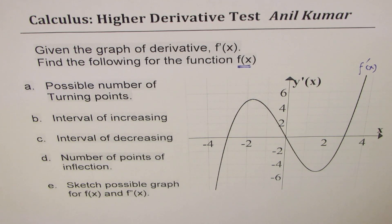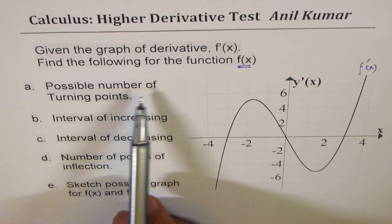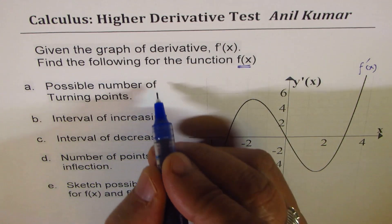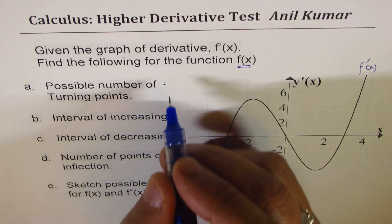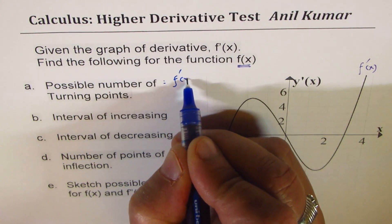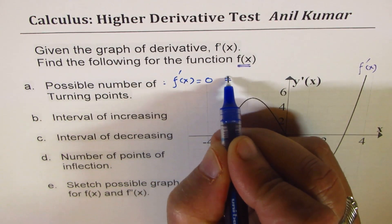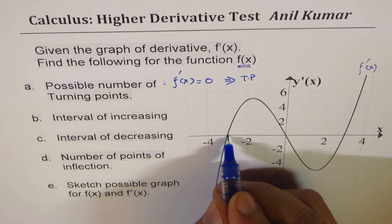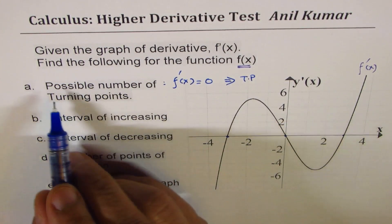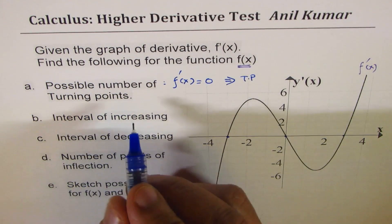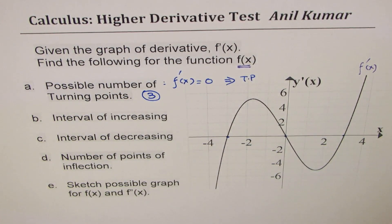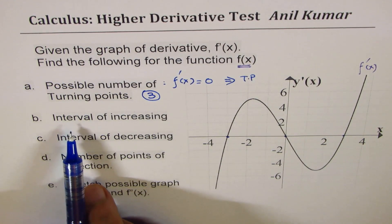Let's answer all these questions. First: possible number of turning points. This graph is for the derivative, and what you realize is that derivative equals zero implies that we have a turning point. There are actually three zeros here, so the possible number of turning points is three.